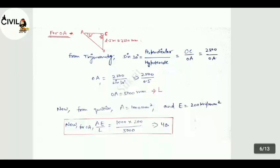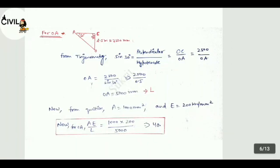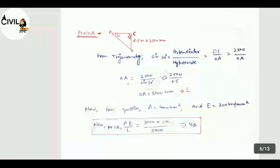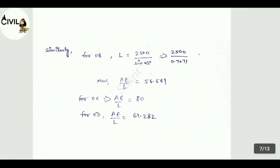Now, question is given area value is equal to 1000 mm square, and E value is equal to 200 kN per mm square. So AE by L is equal to 69.282.